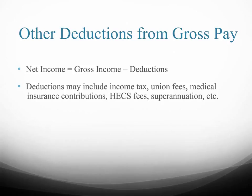So what might these other deductions include? Money can be taken out each pay for union fees, medical insurance contributions, or perhaps the worker has an outstanding HECS debt which needs to be paid. All employers by law have to pay a sum of money known as superannuation for each of their employees. This sum is a percentage of their employees' pay and goes into a fund towards retirement. An employee can also make voluntary payments into this superannuation fund, and these payments are a percentage of their income and are deducted each pay.